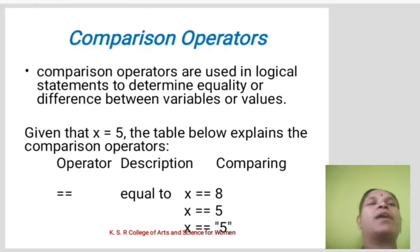Comparison operators. Comparison operators are used in logical statements to determine the equality or difference between variables or values. Given that x equals 5, the table below explains the comparison operators: x double equals 8, x double equals 5, x double equals "5" in quotes.